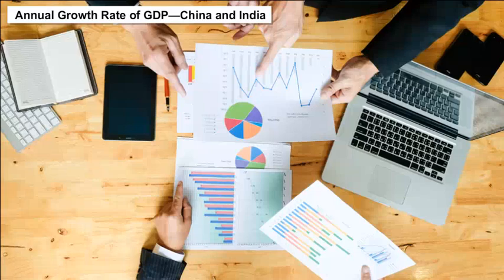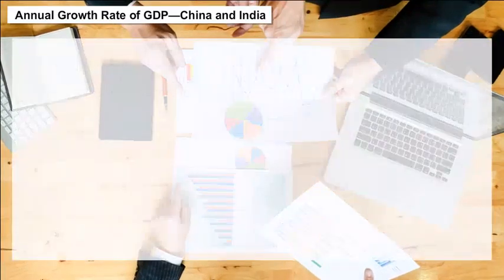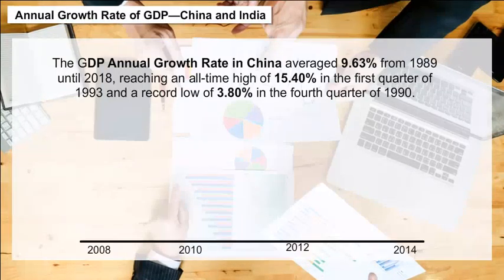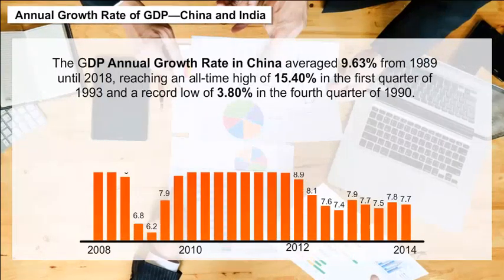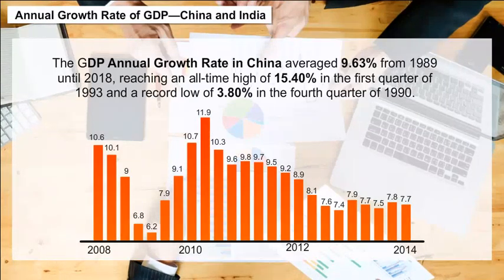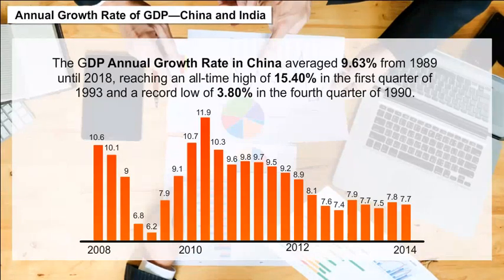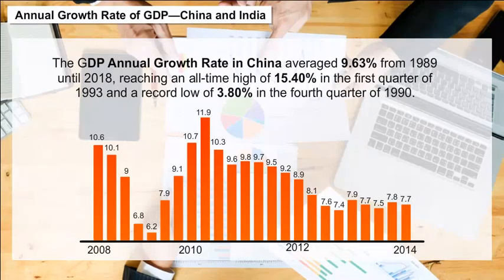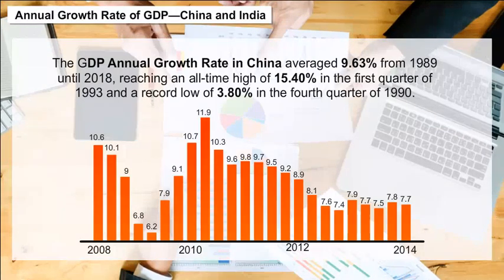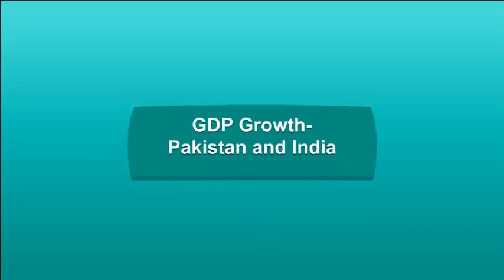Annual Growth Rate of GDP — China and India: The GDP annual growth rate in China averaged 9.63% from 1989 until 2018, reaching an all-time high of 15.40% in the first quarter of 1993, and a record low of 3.80% in the fourth quarter of 1993.